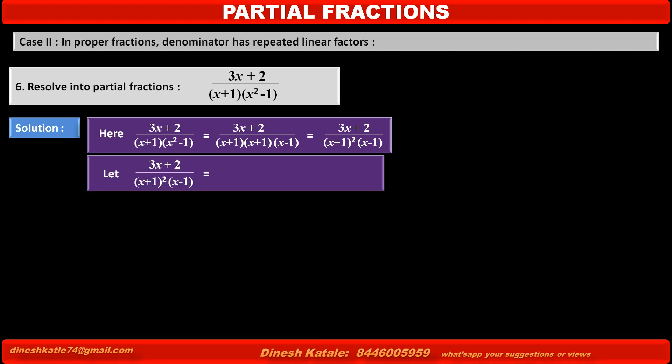Let the fraction (3x + 2) upon (x + 1)² into (x - 1), where the factor (x + 1) is repeated two times, be equal to A/(x + 1) plus B/(x + 1)² plus C/(x - 1).